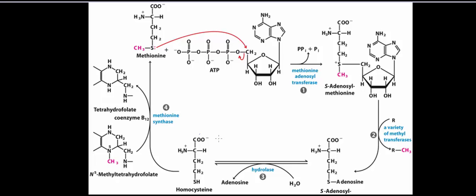So there are a lot of really important examples of methylation reactions that occur in the cell. In general, for the most part, the methyl group donor is going to be S-adenosyl methionine. It's often abbreviated as SAM, or another common abbreviation is AdoMet. I just write SAM because it's a lot easier than writing out S-adenosyl methionine.